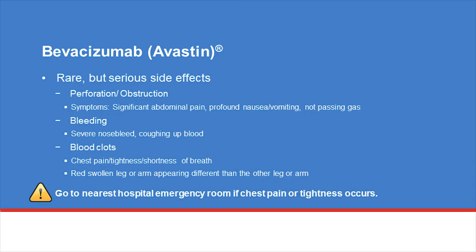Rare but serious side effects of Bevacizumab include a risk of perforation, obstruction, major bleeding, or blood clots. If you develop serious symptoms, go to the nearest emergency room immediately. These include significant and new abdominal pain, profound nausea or vomiting, inability to have a bowel movement, a severe nosebleed that won't stop, blood when you cough, new chest tightness, and a swollen and red leg that is painful.